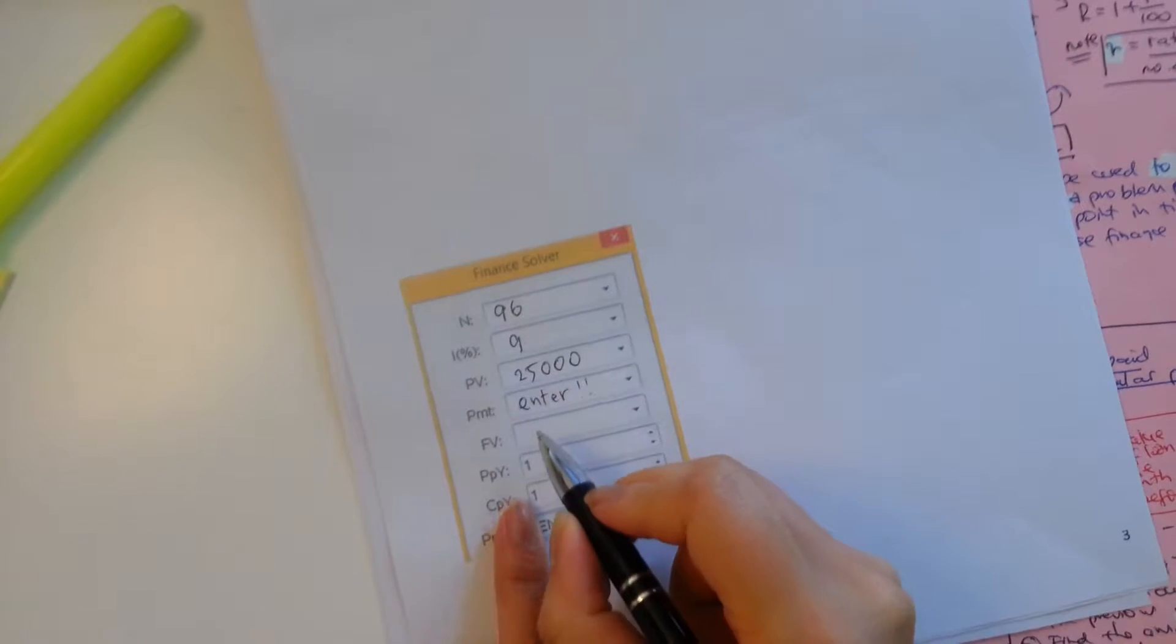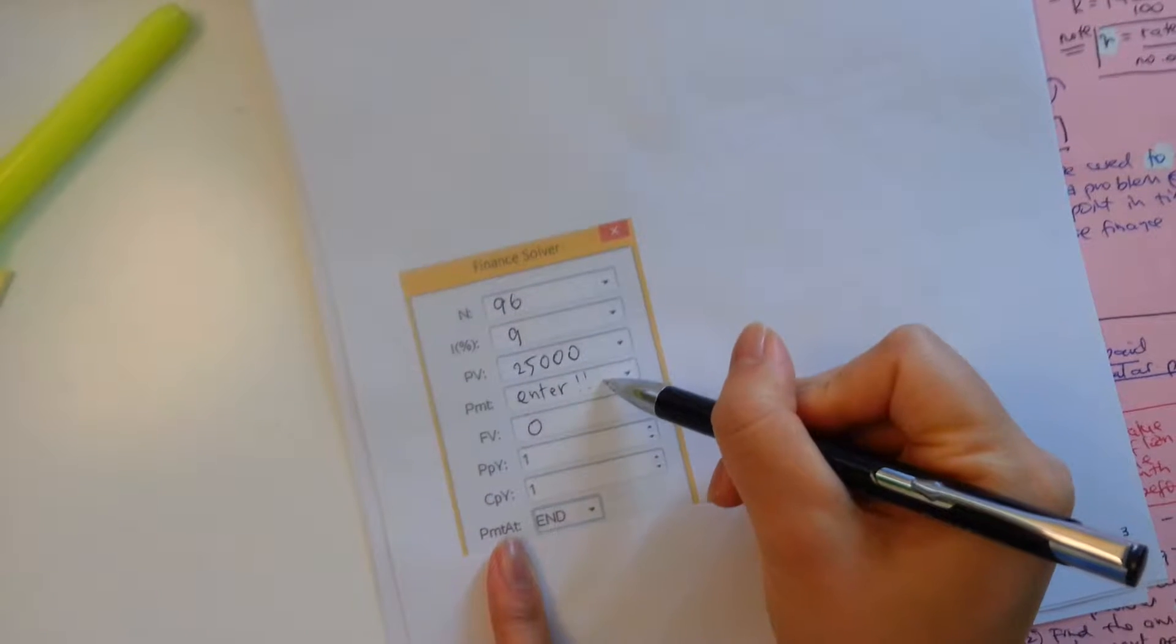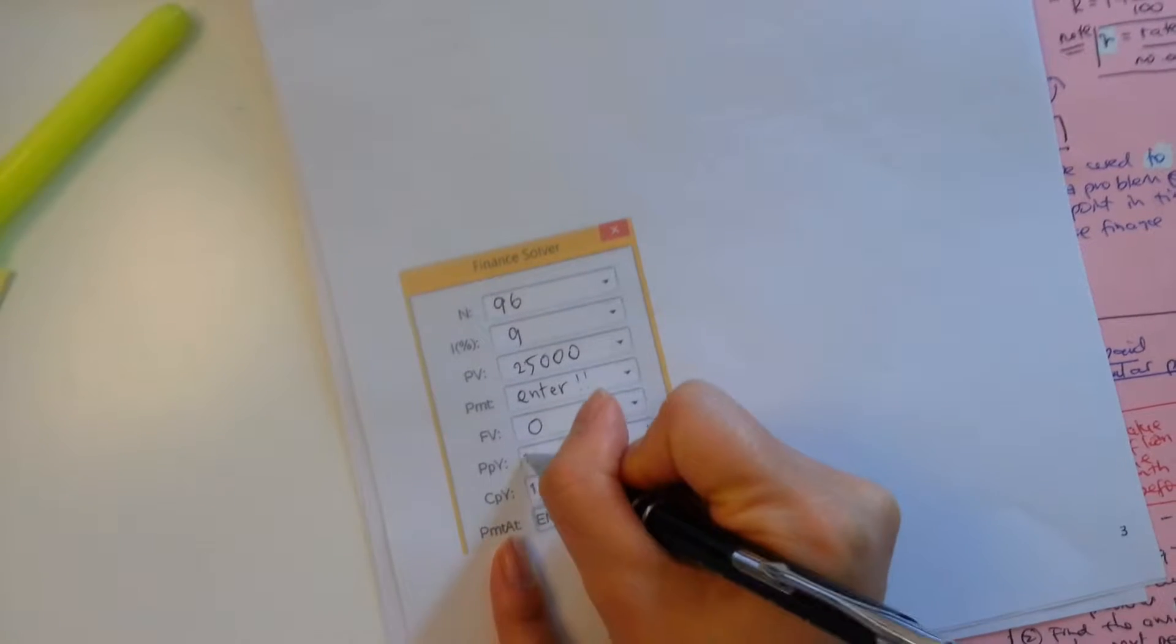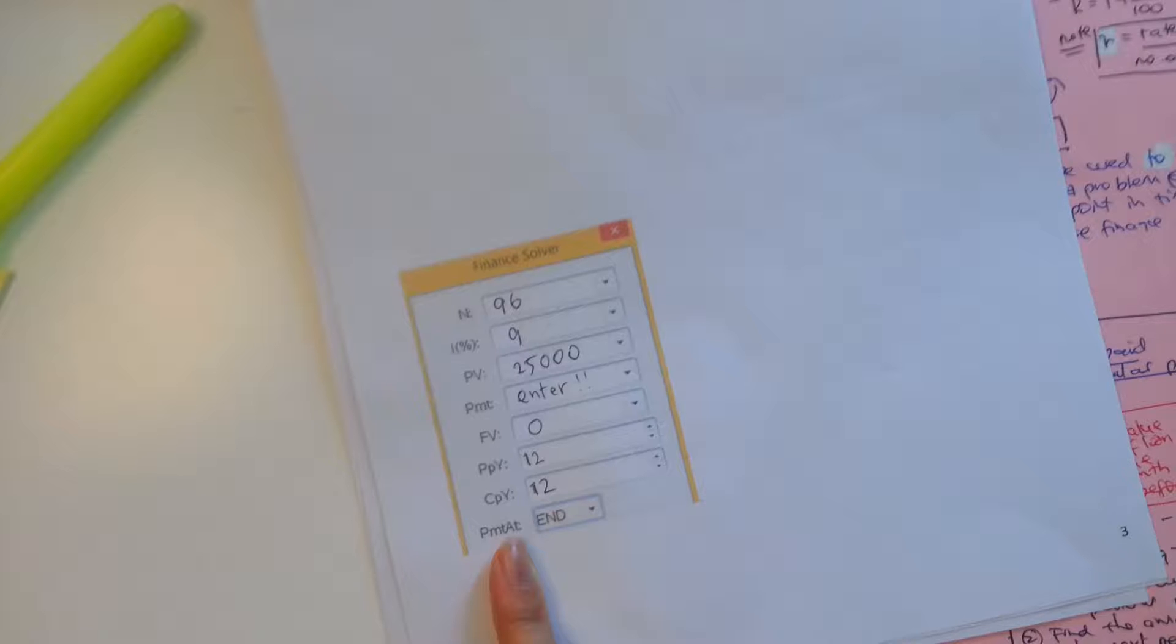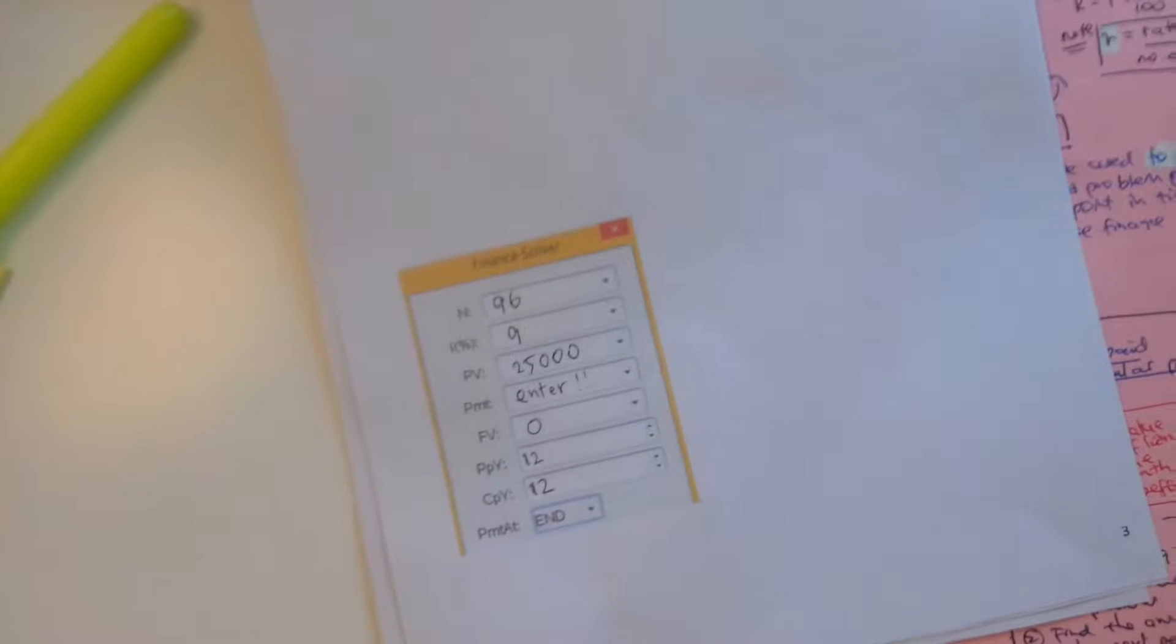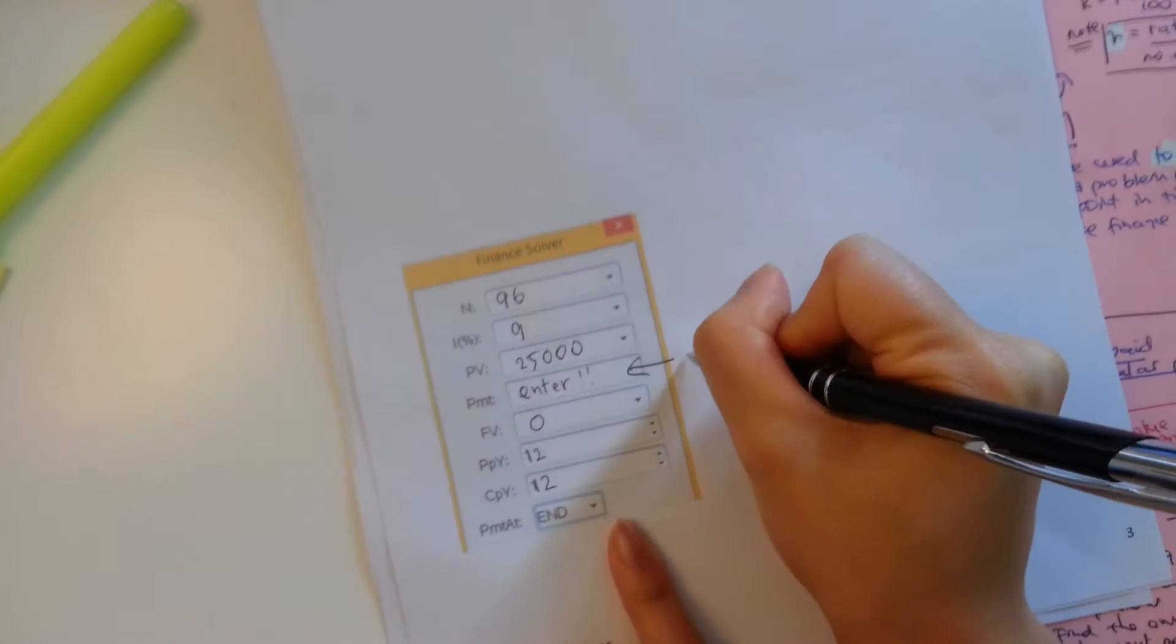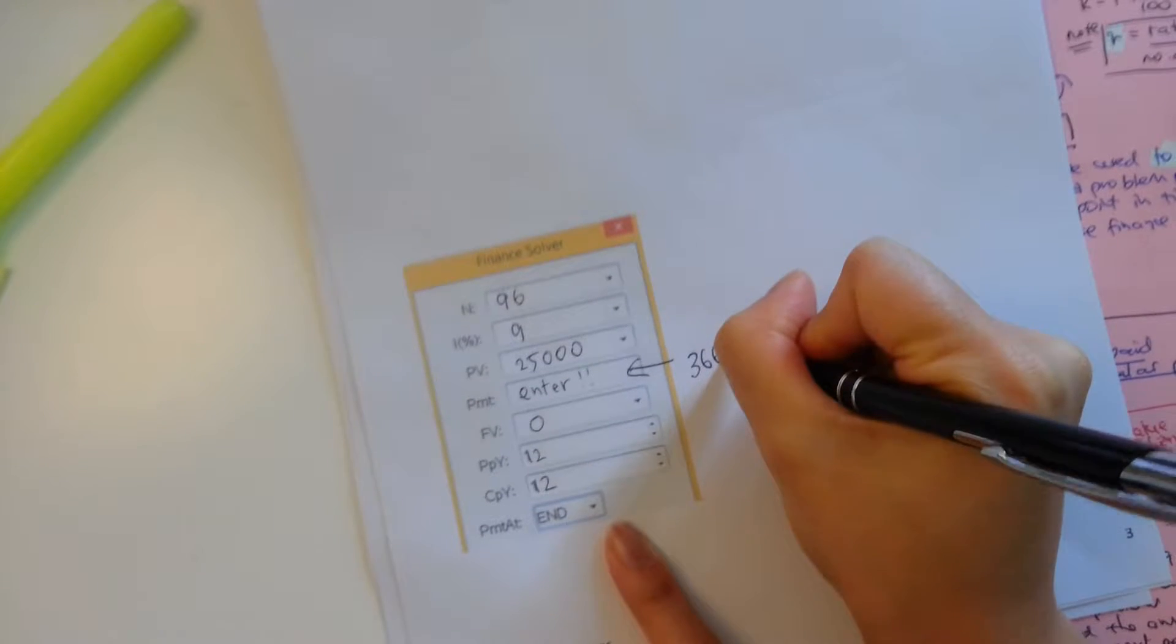Your future value, we're going to set it to zero because we want to know what our monthly repayments will be to pay it off. And because it's monthly, your PPY and CPY will both be set to 12. So you will hit enter there.